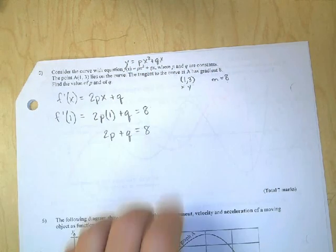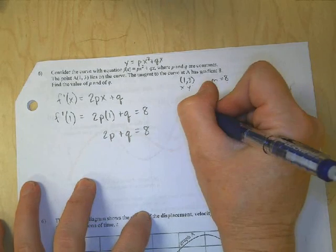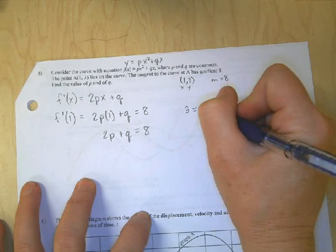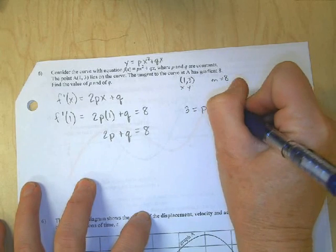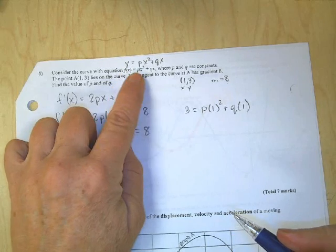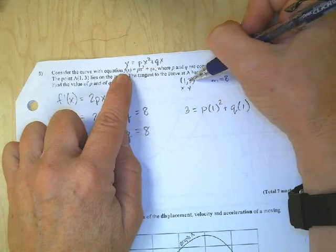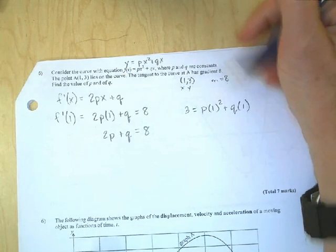I can use that equation, and I can substitute in my 1 and my 3. So I have 3 is equal to P times 1 squared plus Q times 1. So I am just taking the original equation, and I know that when X is 1, Y is 3. So I have a second equation, and I can simplify that.